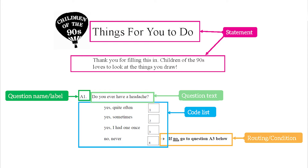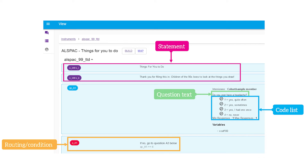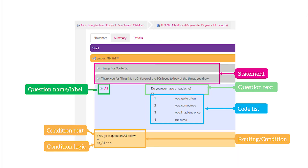To give an example, here is one question from a questionnaire broken down into multiple elements. We have a statement at the top giving general information, then the question text and question label. This question has a code list — a type of response domain that allows participants to choose from predetermined options — and a condition which filters which participants should answer the following questions. Here we have all of that metadata in Archivist, and here it is in CLOSER Discovery.